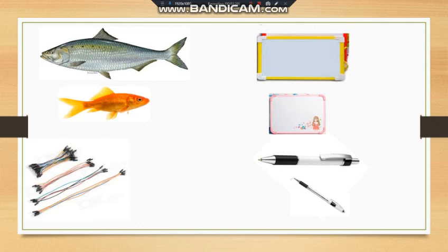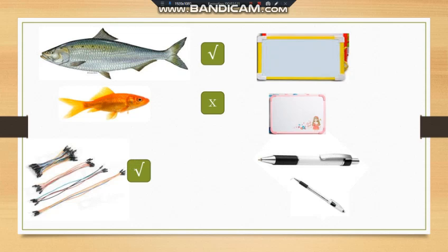See, the first one: black color fish and yellow color fish. Which have more length? Black color fish has more length. Therefore, write the tick mark — that is the correct mark. And in the bunches of wires, the 4th number bunch has more length.